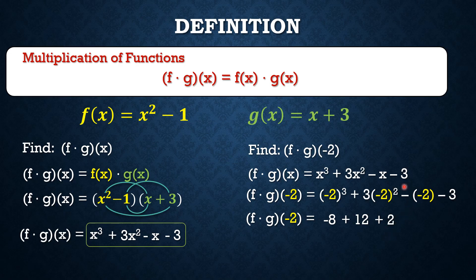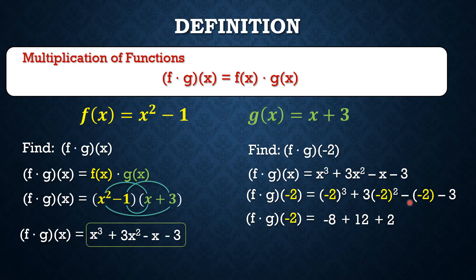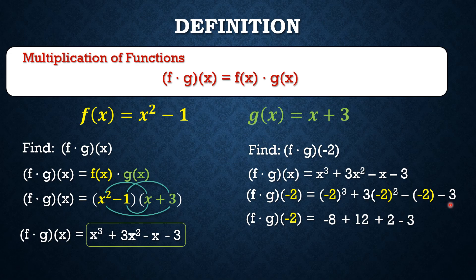Take note, when negatives are next to each other, it automatically becomes positive. So it's like negative 1 times negative 2, and that is positive 2. Or negative of negative 2, and that is positive 2. And we still have negative 3.